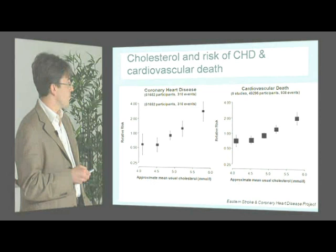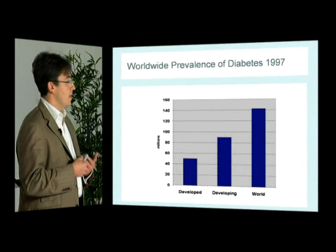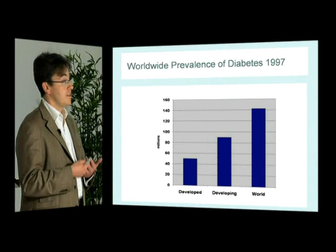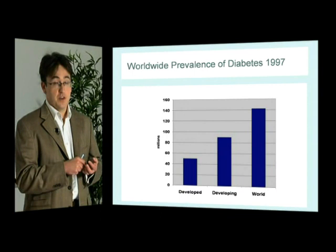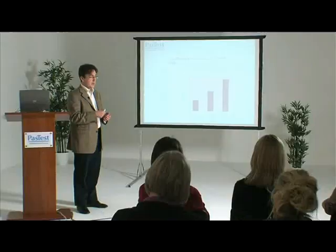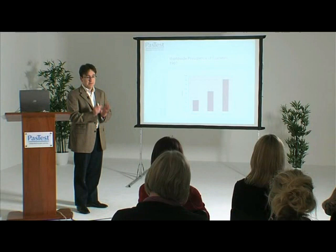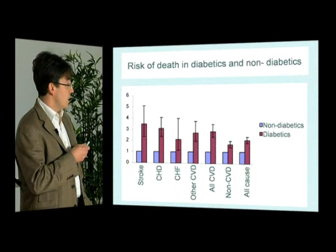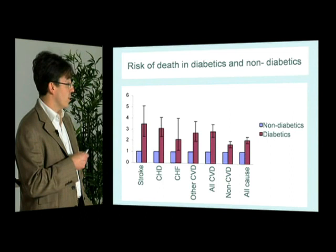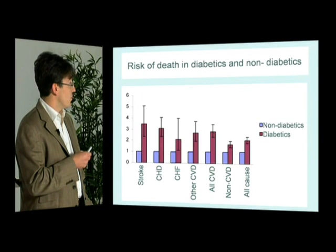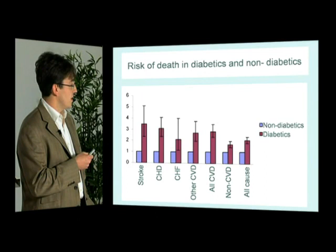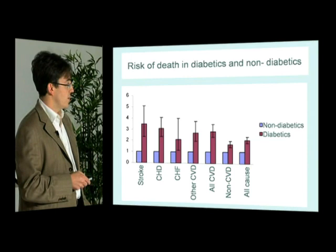Diabetes is a growing epidemic spreading from the developed to the developing world and will greatly impact the burden of arterial disease in our lifetime. It is a marked cardiovascular risk factor for both coronary artery disease and stroke, and we should always ensure the best possible diabetic control. Diabetes predisposes to a whole range of diseases — stroke, coronary heart disease, congestive cardiac failure and all-cause mortality — with a marked difference seen between diabetic and non-diabetic groups across all these disease spectrums.